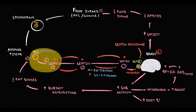So feeling of satiety decreases, as a result appetite increases, and increasing appetite provokes increasing food intake. So the person will intake another portion of meal. More triacylglycerols will enter the adipose tissue. The higher the amount of triacylglycerols in the adipose tissue, the larger becomes the adipose tissue mass. So obesity develops. And because obesity is caused by leptin resistance, we call this obesity type 2.